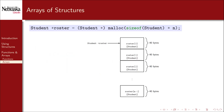Here's the first approach: a dynamically allocated contiguous array of structures. Roster[0], roster[1], etc. are all chunks of contiguous 40 bytes, one after the other, containing each student's data. To achieve this, we simply call malloc and allocate enough space for n student structures — exactly how we would do it with an array of integers or characters.